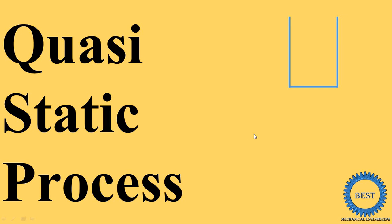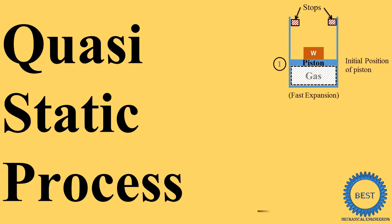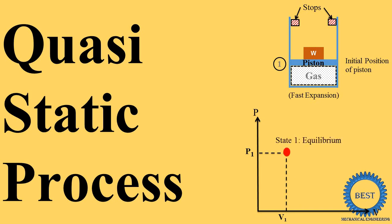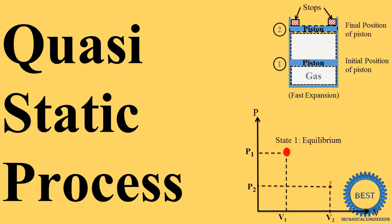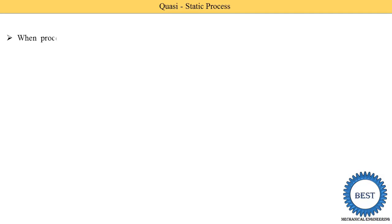In this video, I explain the quasi-static process by using various animations of the piston-cylinder arrangement as well as the PV diagram, so you can easily understand it. The quasi-static process has generally two characteristics: it is a reversible process and it is a slow process. First we understand the definition of the quasi-static process, and then understand it by taking examples of the piston-cylinder arrangement.